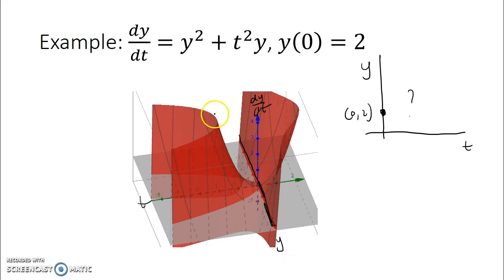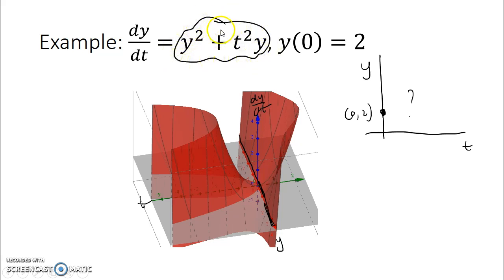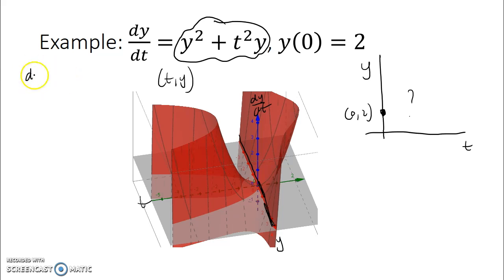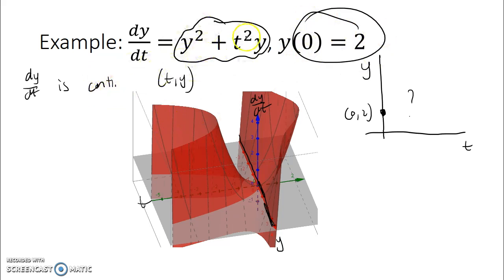Looking at the 3D graph, we can see this function is continuous — it's almost like a saddle shape, and the gray ty plane shows no discontinuities. This makes sense because for any ty point: can I square any value of y? Yes. Can I square any value of t and multiply by y? Certainly. There's no issue with squaring values or multiplying by y, so dy/dt is continuous everywhere — there's no t or y I could plug in that would produce an undefined dy/dt.